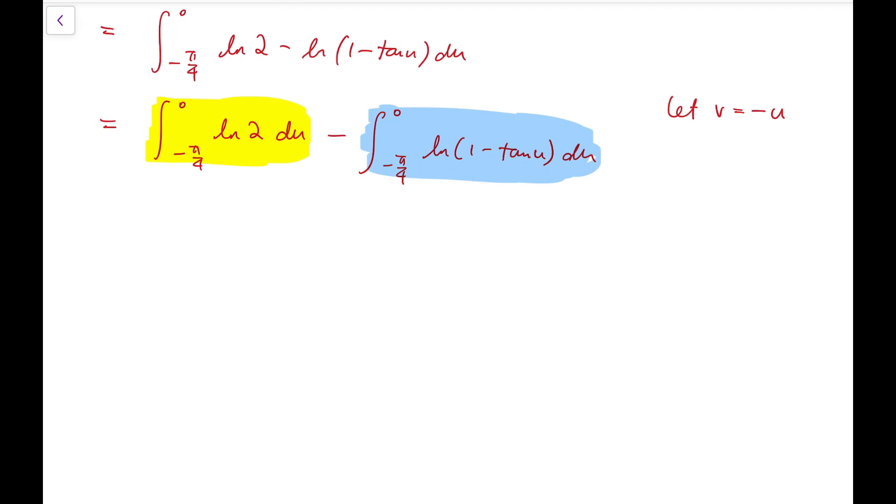I'm going to continue working on natural log of 1 minus tangent u. I've let v equal minus u, and so our differential du is actually equal to minus dv. When u equals 0, then v is 0, while for u equals minus pi over 4, v is equal to pi over 4. This is another coincidence: I'm not only getting the same integrand, but I'm actually getting the same limits.